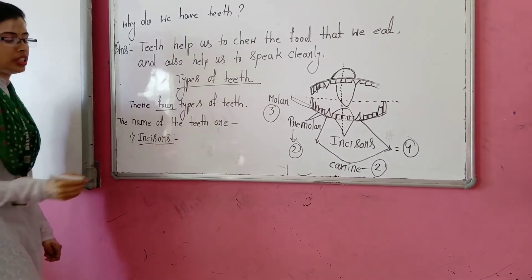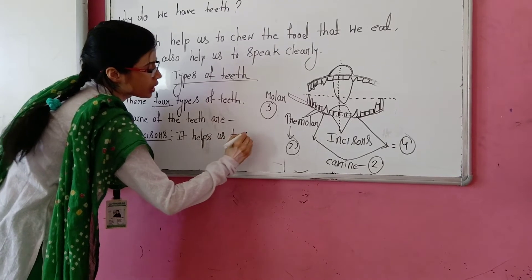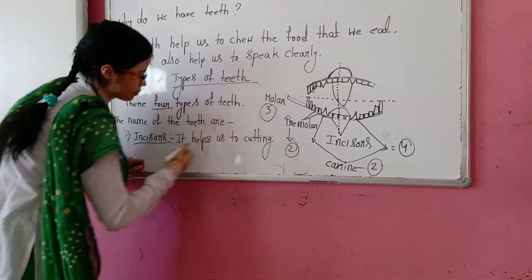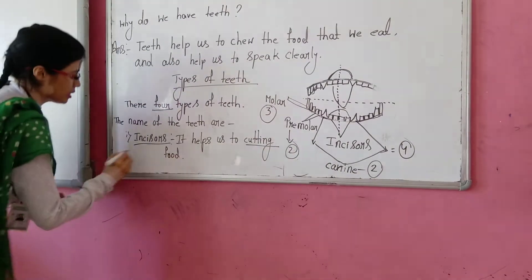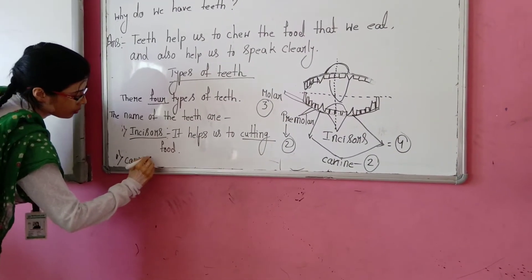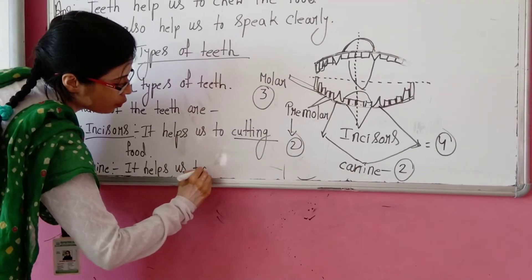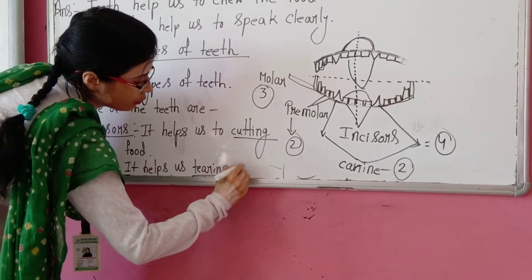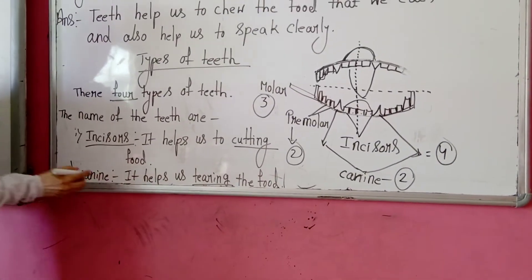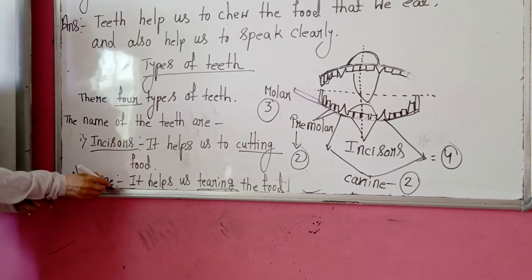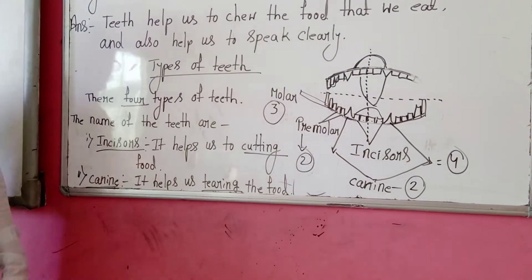The first four front teeth are called incisors. The function of incisors is cutting — it helps us to cut food. Next, canine: it helps us to tear food. When you eat flesh-type food, you need the canine. This is why canines are very sharp in flesh-eating animals such as lions, tigers, and dogs.